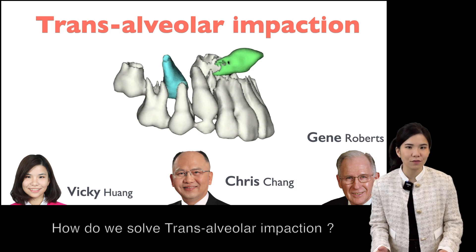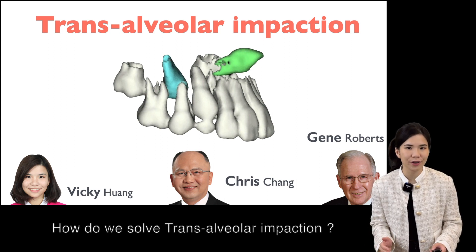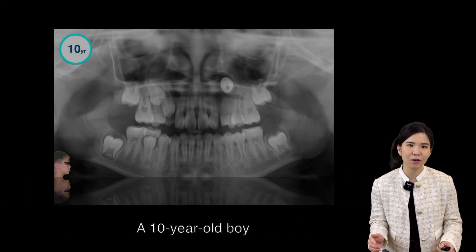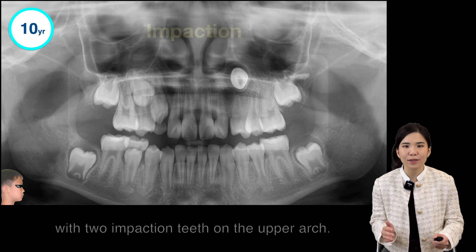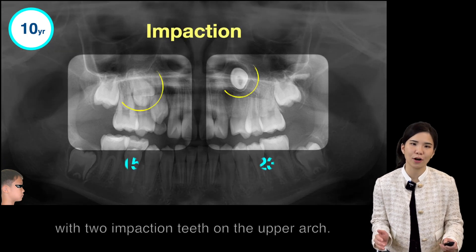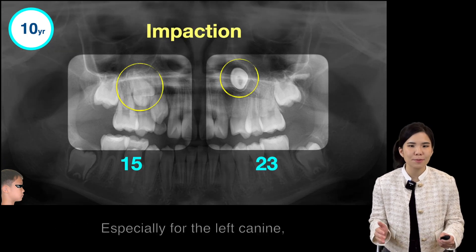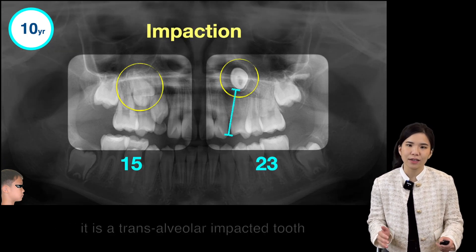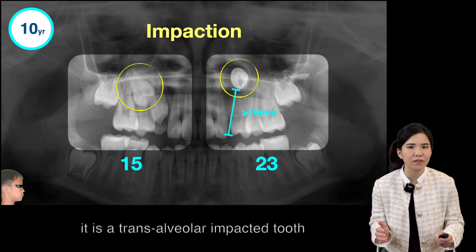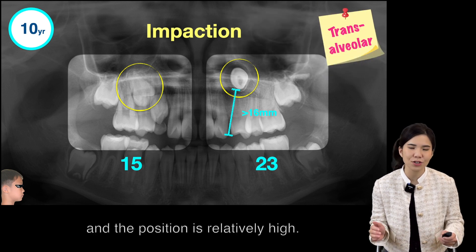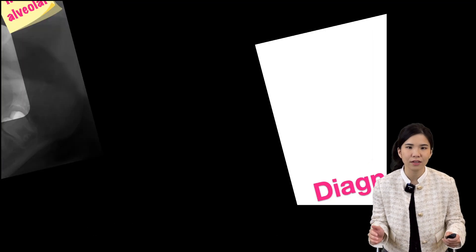How do we solve transalveolar impaction? A 10-year-old boy presents with two impacted teeth on the upper arch, especially the left canine, which is a transalveolar impacted tooth positioned relatively high.